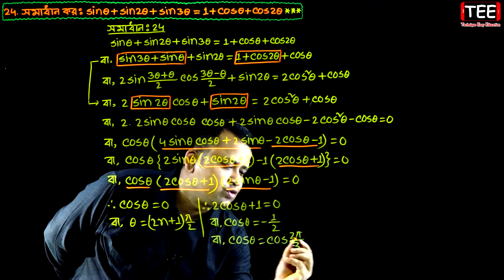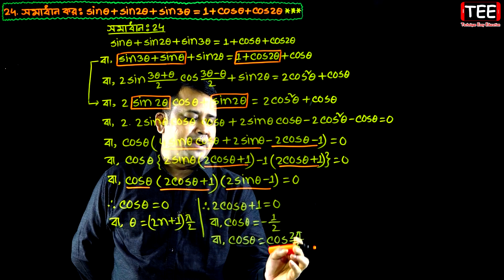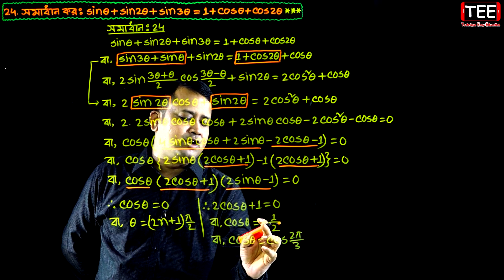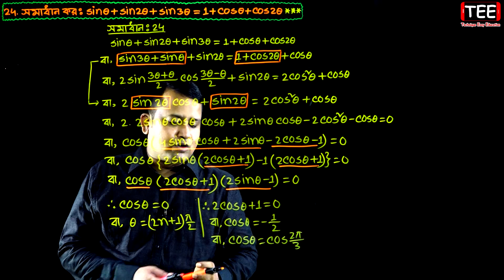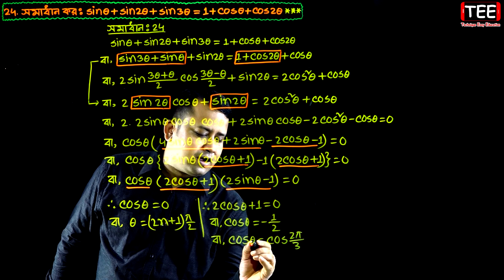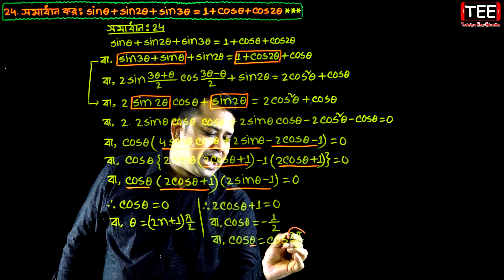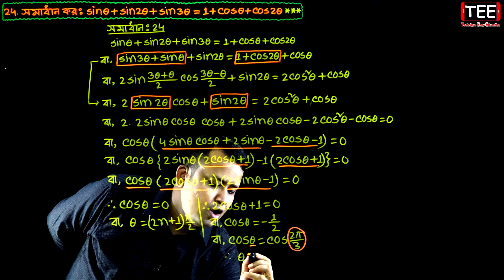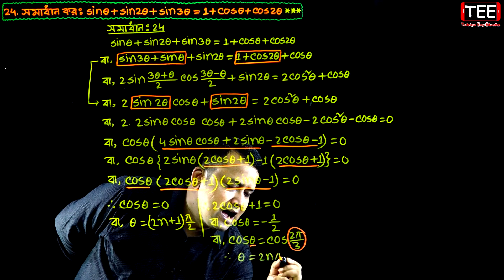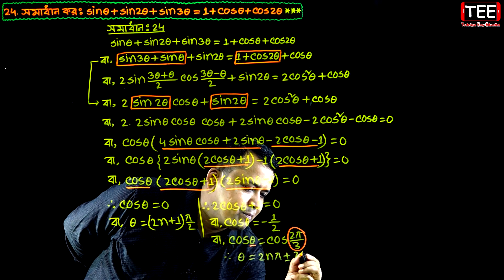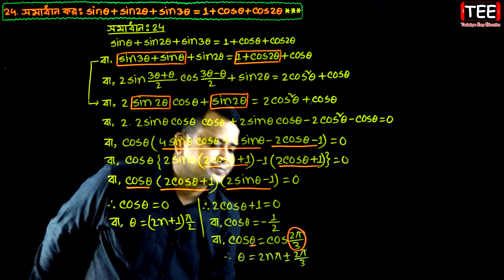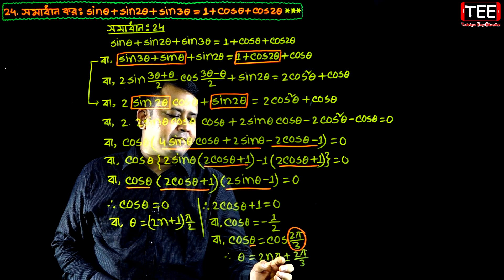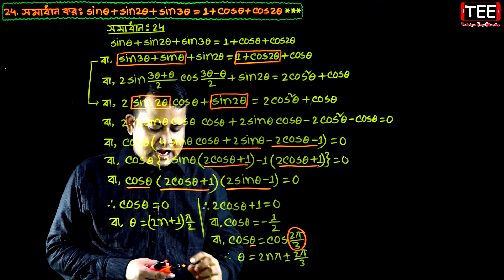We write cos 2 pi by 3 is minus 1 by 2. 2 pi by 3 is minus 120 degrees. Cos 120 degrees equal to minus 1 by 2. We write this. Cos theta equal to cos alpha, so theta equal to 2n pi plus minus alpha. We write 2 pi by 3.